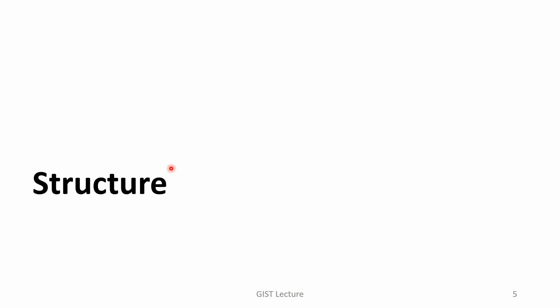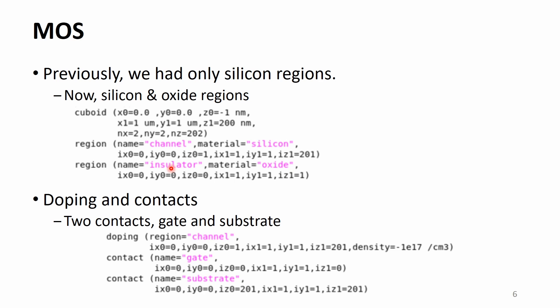Now, it's time to construct a MOS capacitor. Previously, for PN junction, we had only silicon regions. For the MOS capacitor, we need silicon and oxide regions. Once a cuboid is declared, it is divided into two regions, channel and insulator.